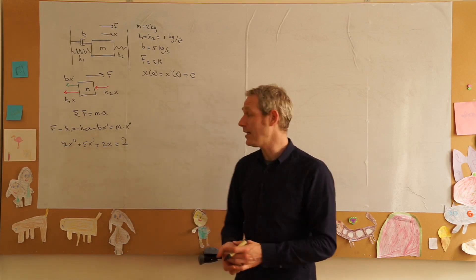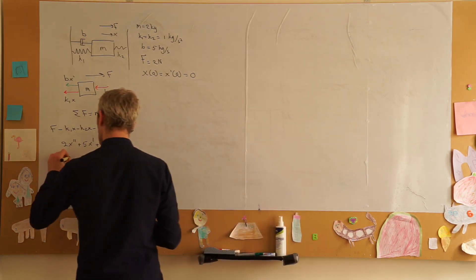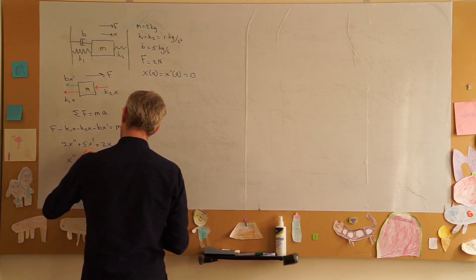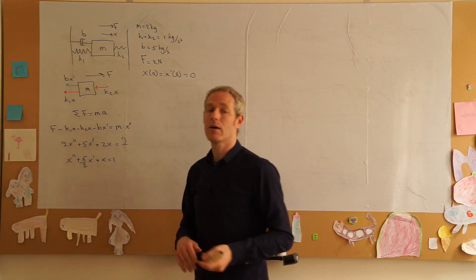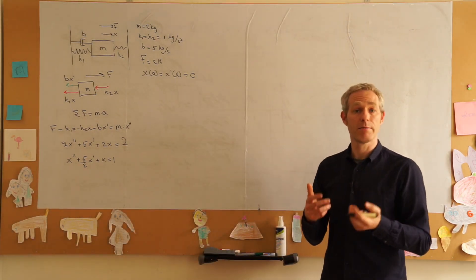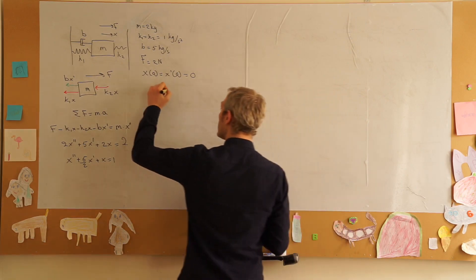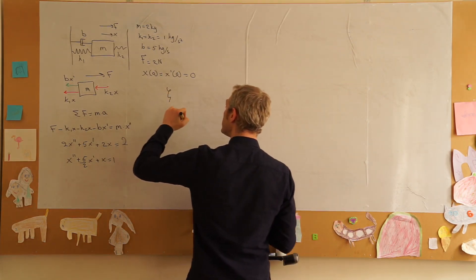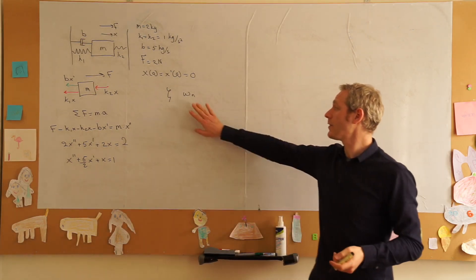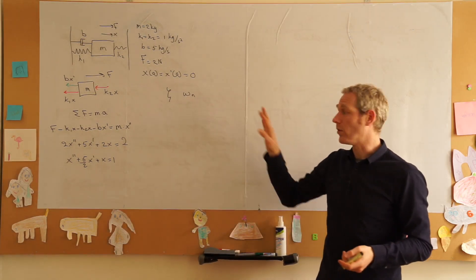Now we can determine the properties of this system, namely two properties: the damping coefficient and the natural frequency of the system which is the frequency of the system if there is no damping.